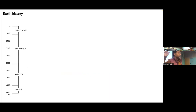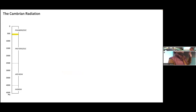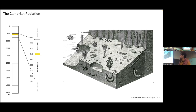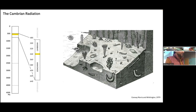To find when the first metazoan framework reefs appeared, I need to look deep into Earth history. I'm showing a simple timeline divided into four eons: the Hadean, Archean, Proterozoic, and Phanerozoic. I'm interested in the moment between the Proterozoic and Phanerozoic, right between the Ediacaran and Cambrian. The Cambrian, about 540 million years ago, was the first time animals started to engineer their environments — churning up ocean floors, building large structures, and generally changing Earth's biogeochemical cycles.